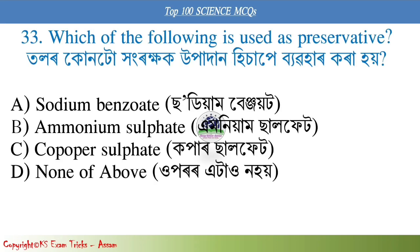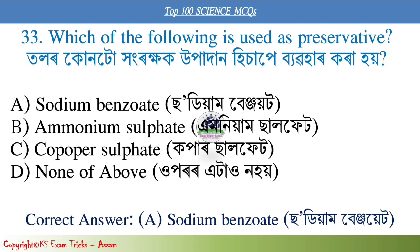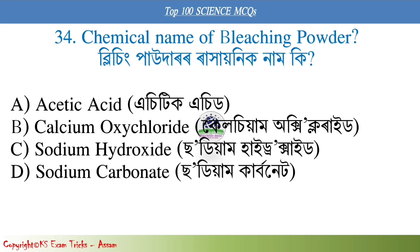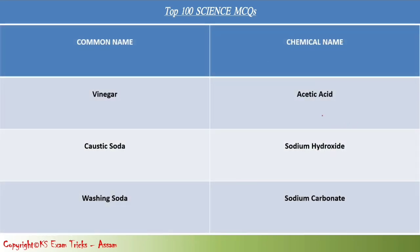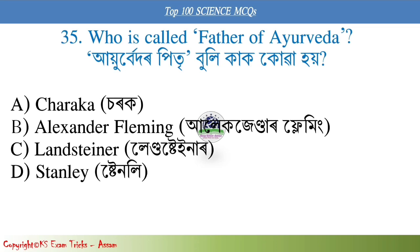Which of the following is used as a preservative? Next question: Chemical name of baking powder. Baking powder is sodium carbonate. This is important. Next question: Who is called Father of Ayurveda?